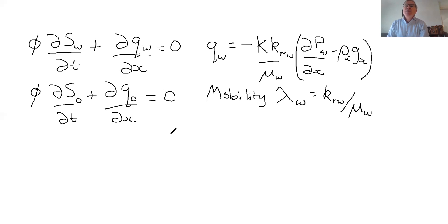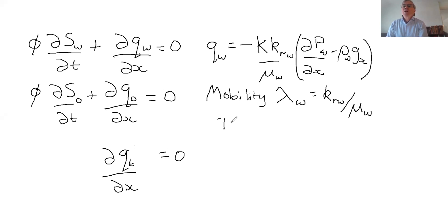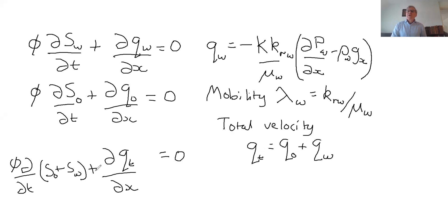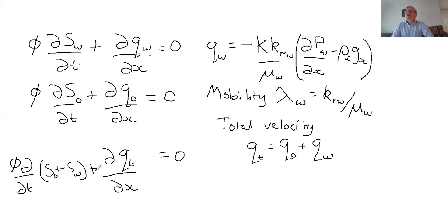The next step towards finding an analytic solution is to add those two equations together. So zero plus zero is zero. What I define here is what's called the total velocity Qt, which is equal to Q_oil plus Q_water. The total velocity is the Darcy velocity of oil plus water — the total volume of fluid flowing per unit area per unit time.